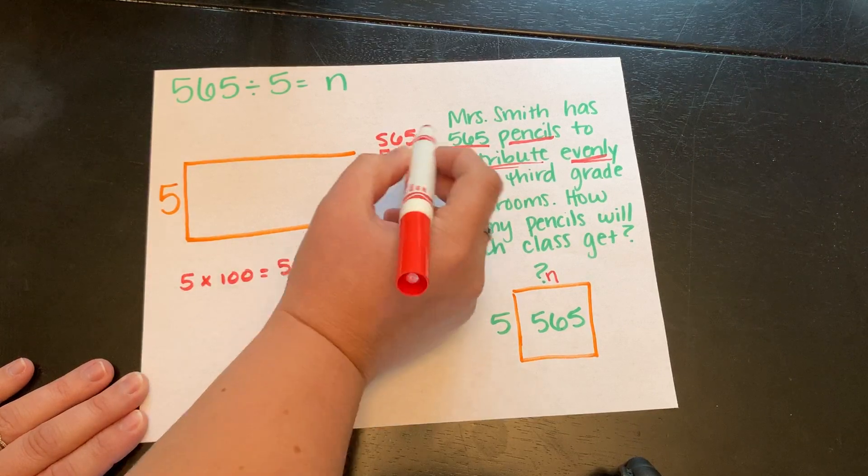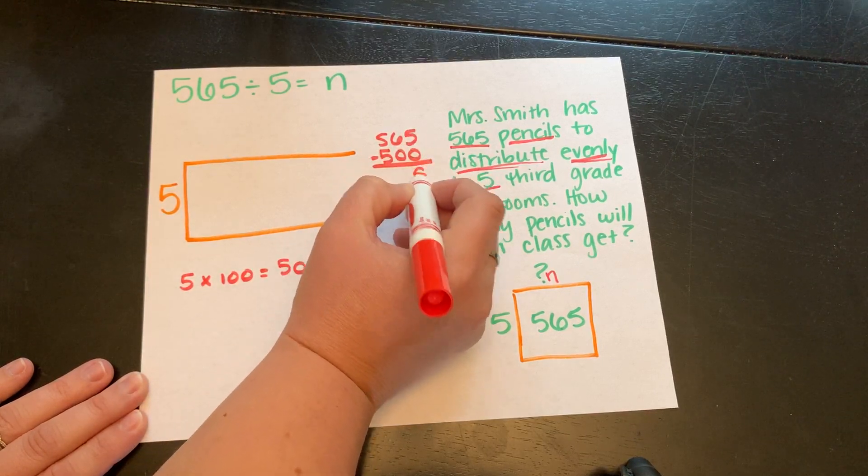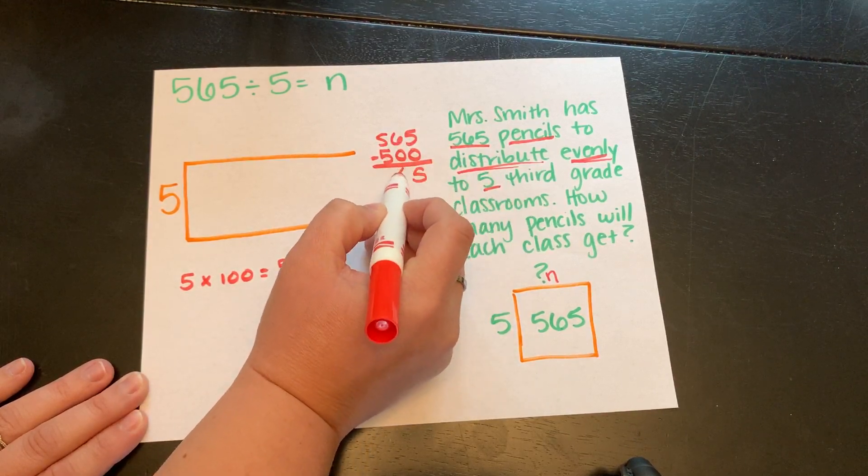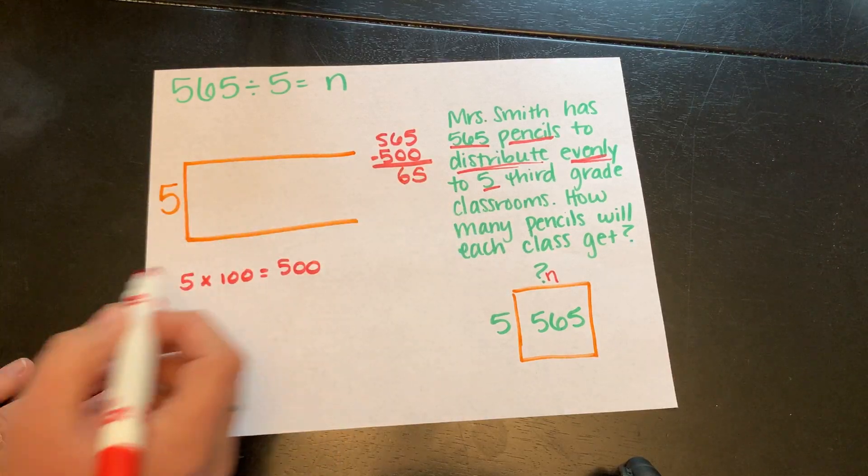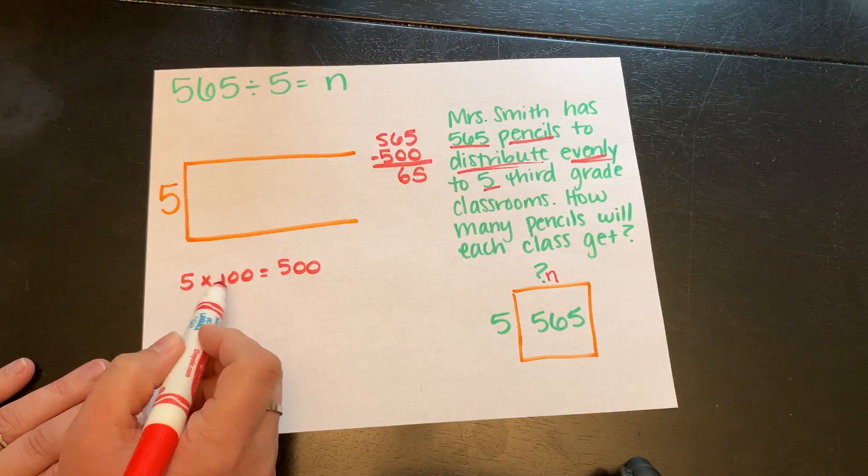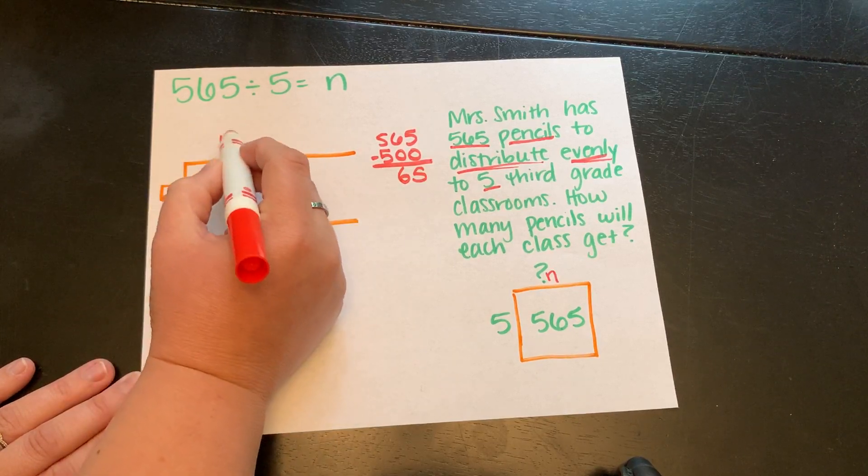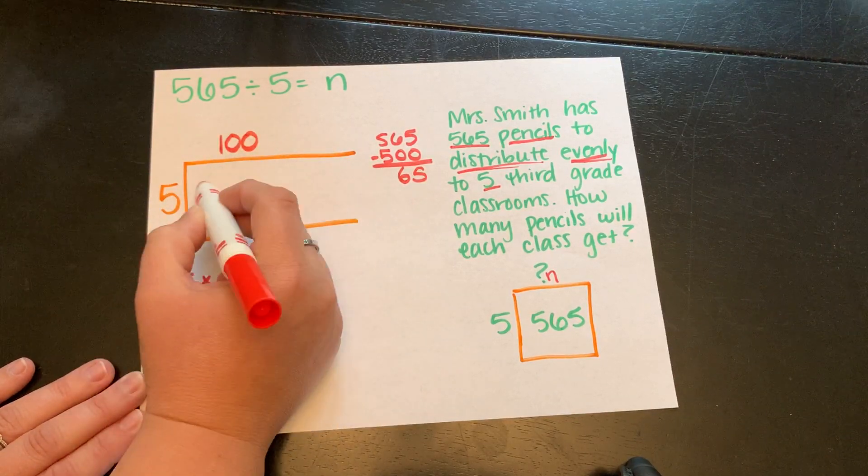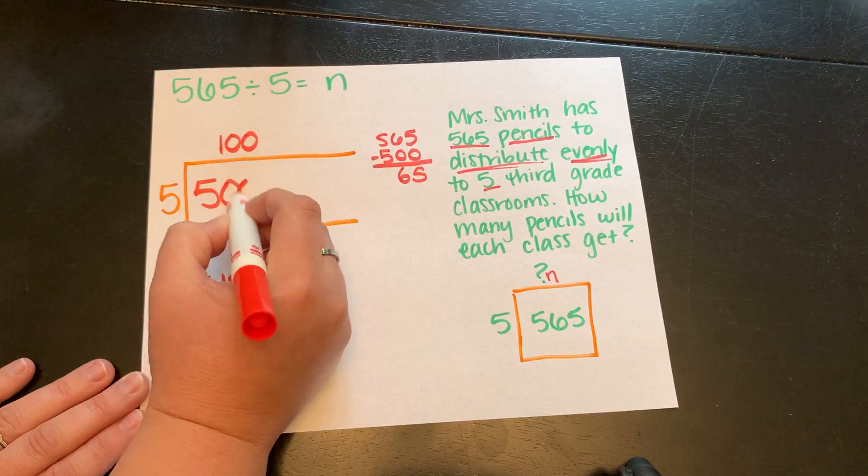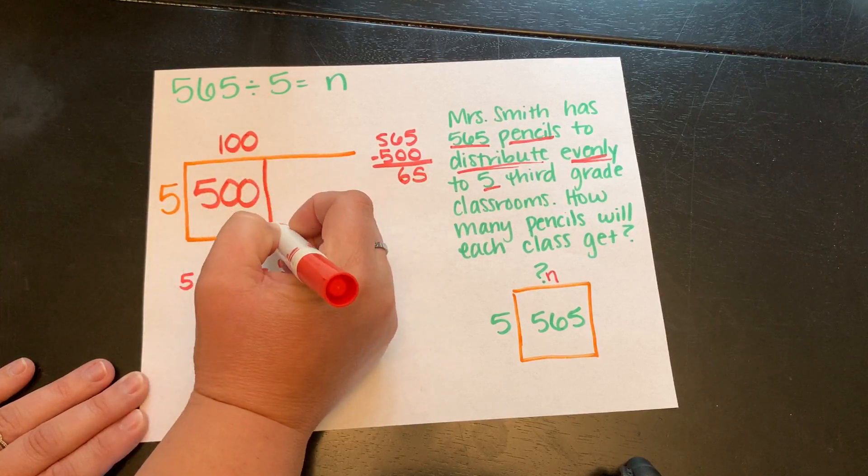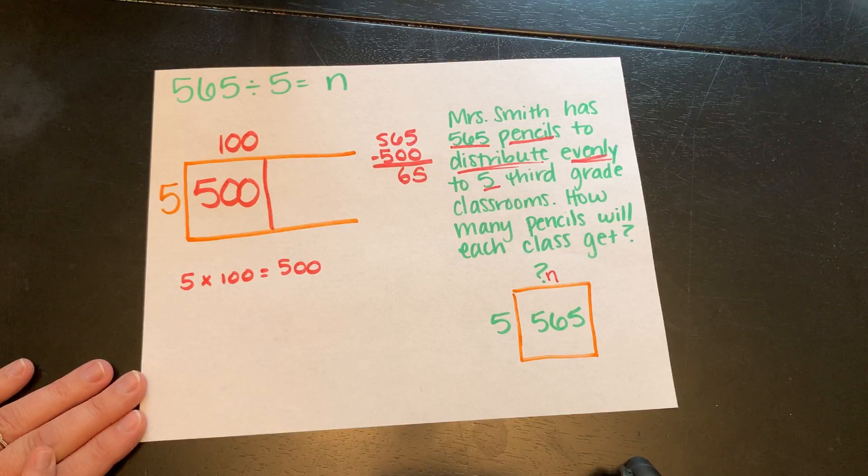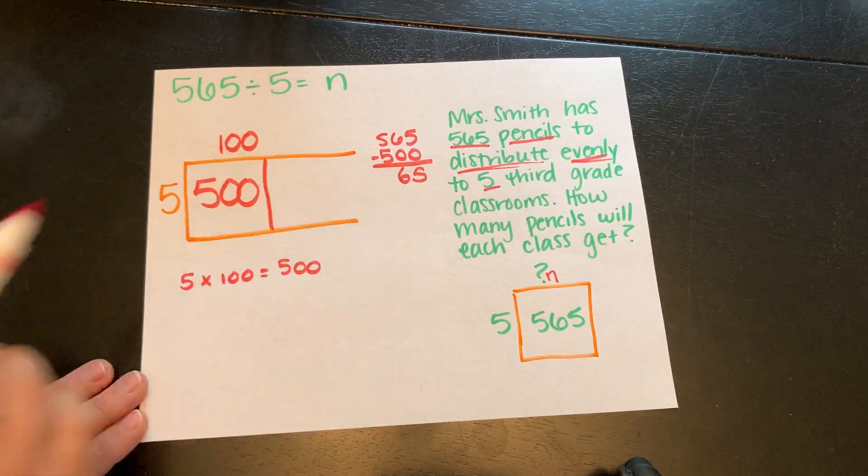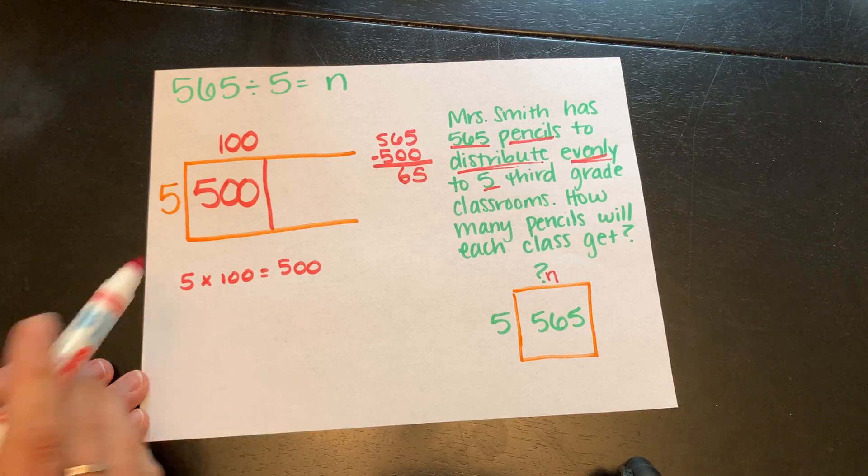5 minus 0, 6 minus 0, and then 5 minus 5 is 0. We can leave that off there. So what I did right then is I did 5 times 100. So our partial quotient goes on top, and what we're taking away goes inside our array. We had 5 times 100 is 500. Now we have 65 left to distribute evenly into 5 groups.